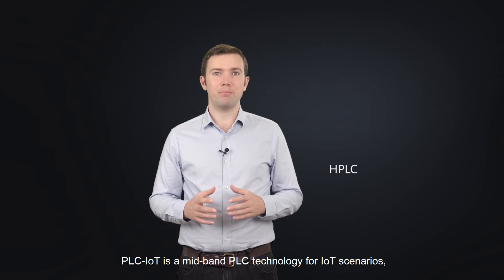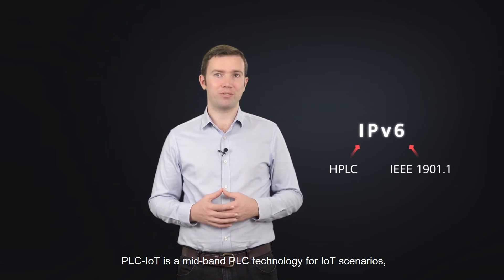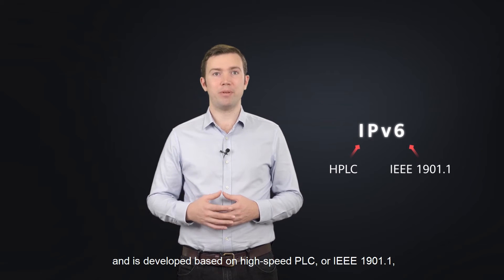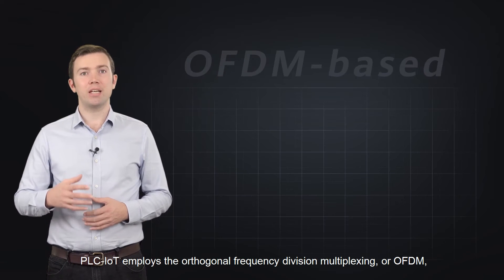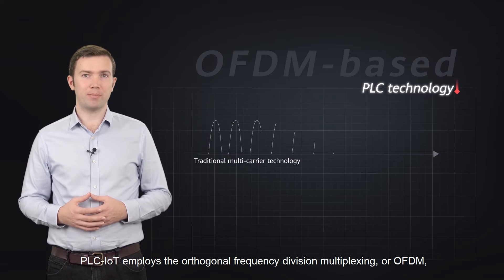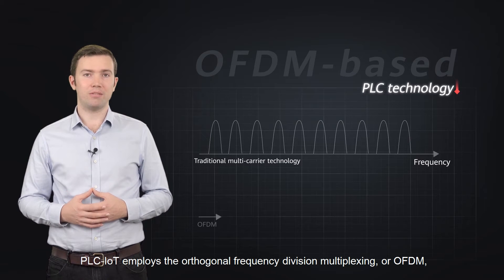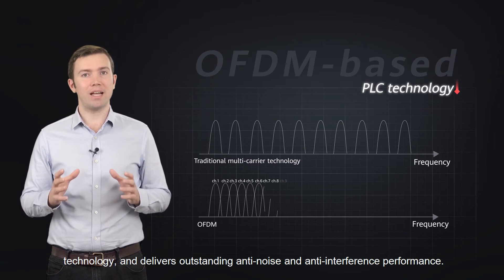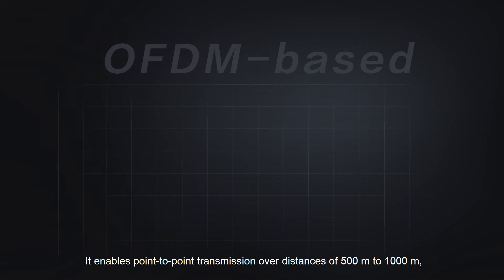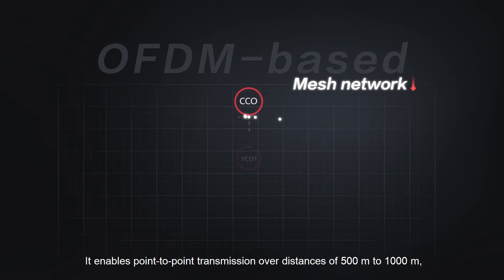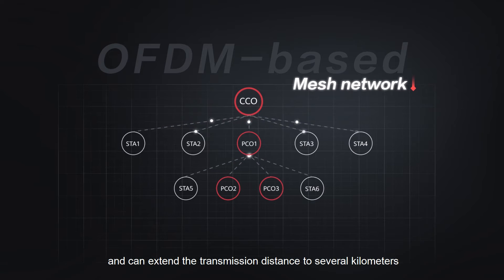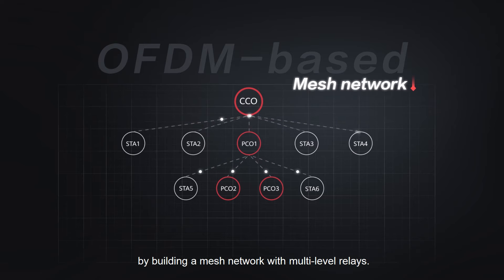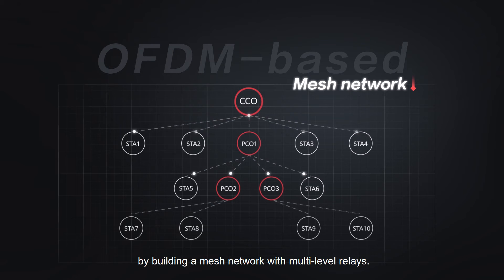PLC IoT is a midband PLC technology for IoT scenarios, developed based on high-speed PLC or IEEE 1901.1 in combination with IPv6 technology. PLC IoT employs orthogonal frequency division multiplexing, or OFDM, technology and delivers outstanding anti-noise and anti-interference performance. It enables point-to-point transmission over distances of 500 meters to 1000 meters, and can extend the transmission distance to several kilometers by building a mesh network with multi-level relays.